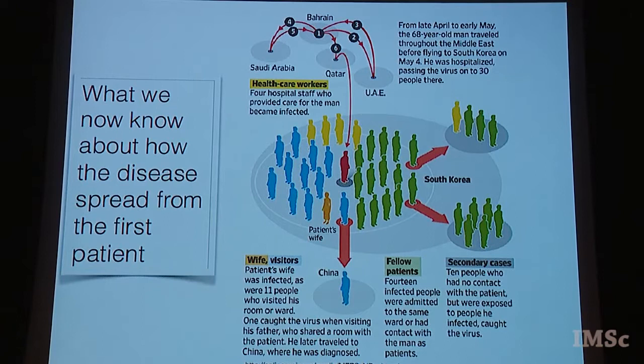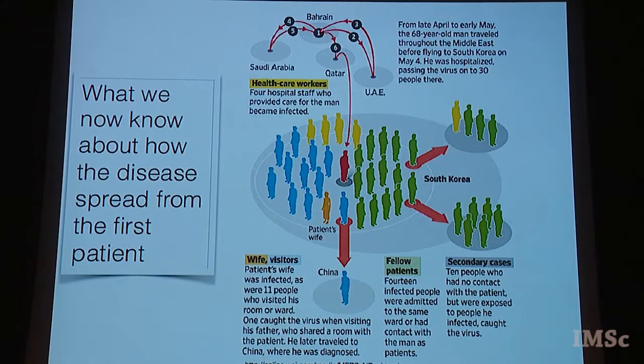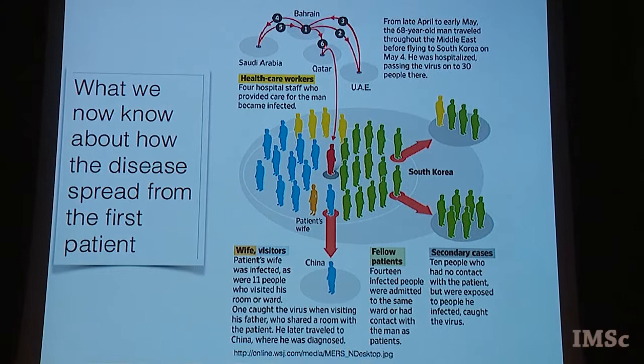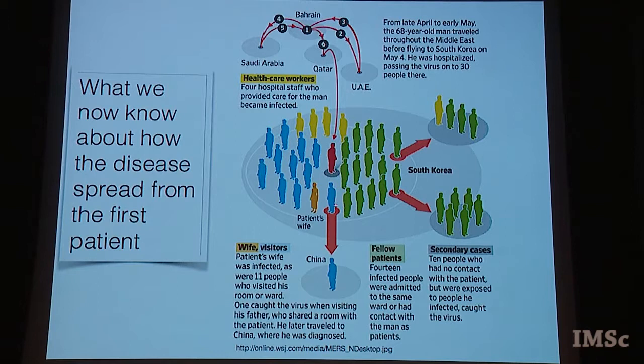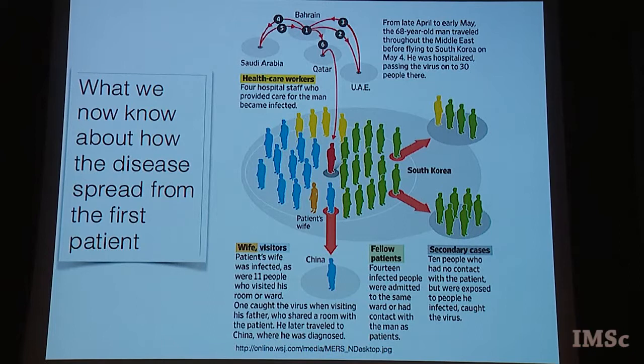We now know a lot about what happened to this gentleman before he turned up in Seoul. He started off in Bahrain, made a trip to the UAE, came back, made a trip to Saudi Arabia, came back, went to Qatar, and from Qatar flew to South Korea — that's the red figure here. These are all the people he came into contact with. His wife was infected; someone else went to meet another patient in the same ward. His son went off to China and infected various people there.